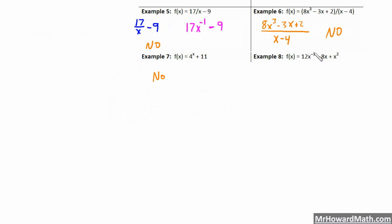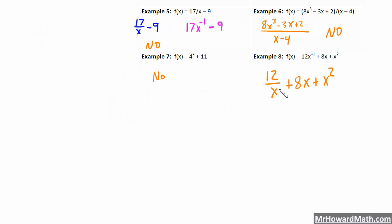Example 8: we can quickly spot this one — not a polynomial. It has a negative exponent. Remember, 12x to the negative 1 could be rewritten as 12 over x. So this could be rewritten as 12 over x plus 8x plus x squared. We have a negative exponent, and if it were given as 12 over x, it would be out because of a variable in the denominator. Either way, regardless of the form, it's out — it's not a polynomial.